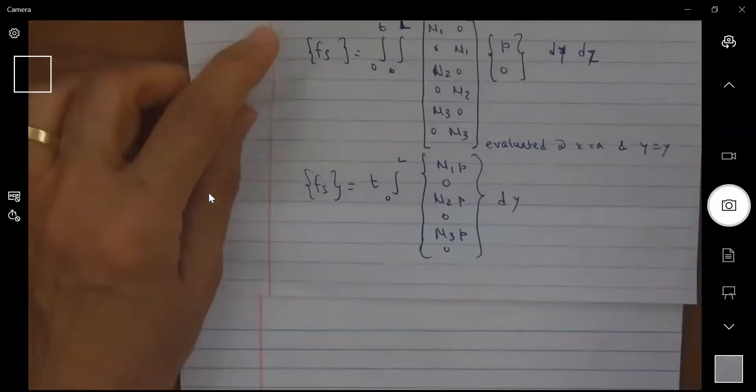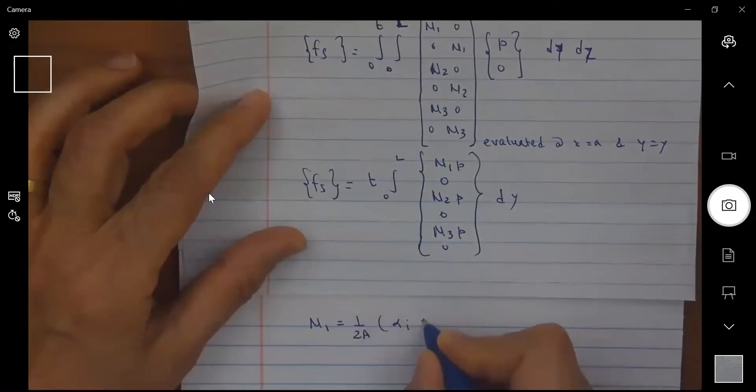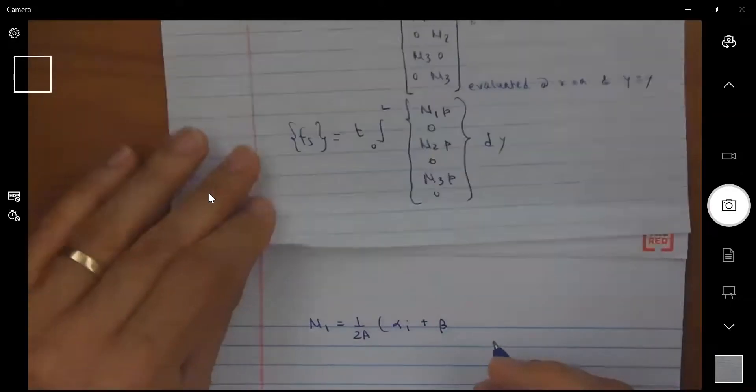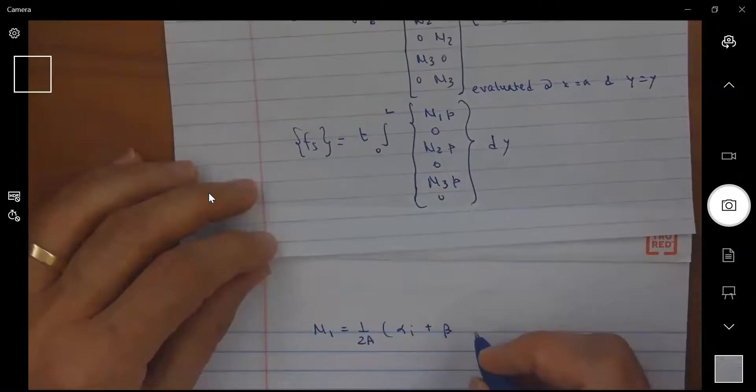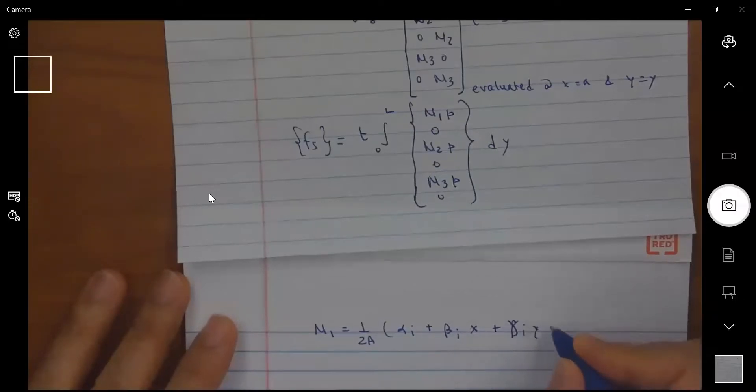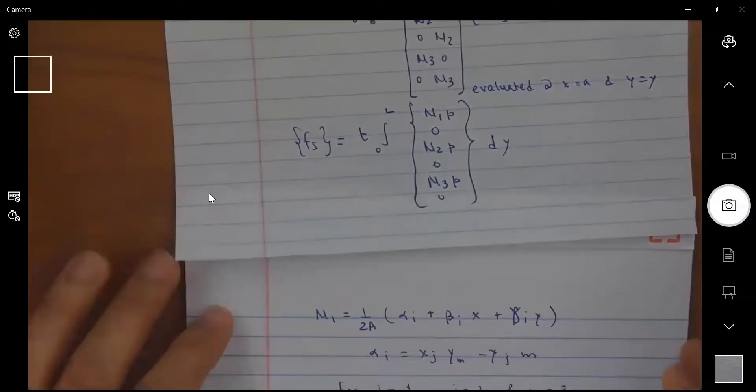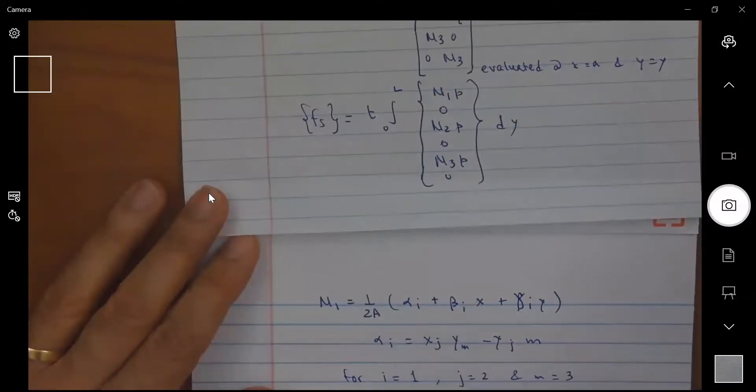Now N1 is equal to 1 over 2A multiplied by alpha I times beta I times X plus gamma I times Y, where alpha I is equal to X J Y M minus Y J times X M. Now for I equals 1, J equal 2 and M equal 3, alpha 1 then is equal to X 2 Y 3 minus Y 2 X 3.